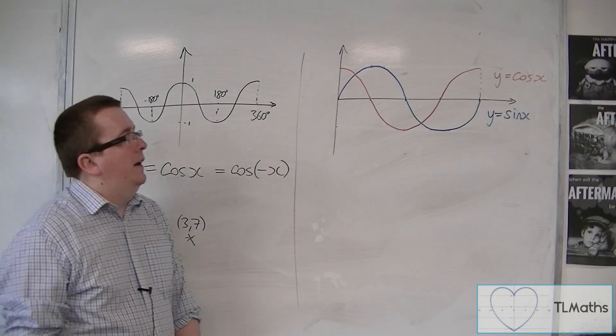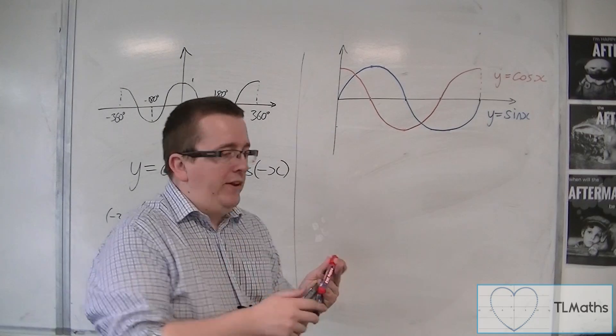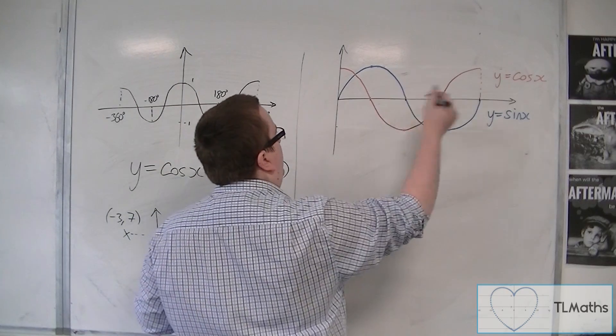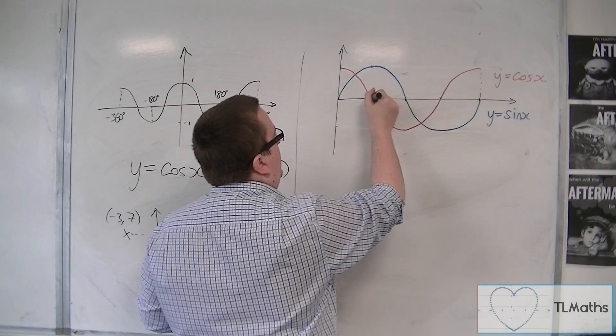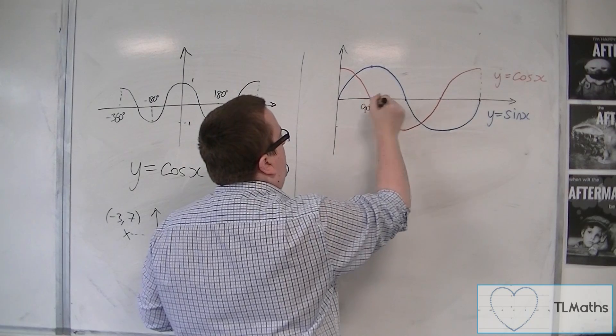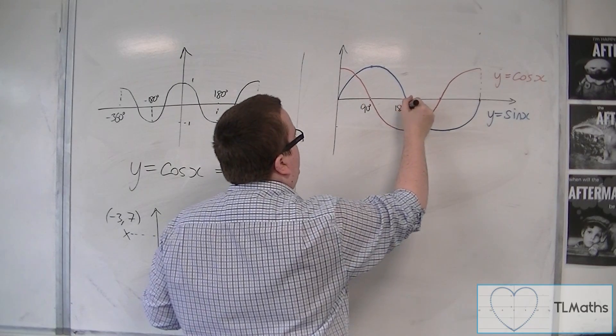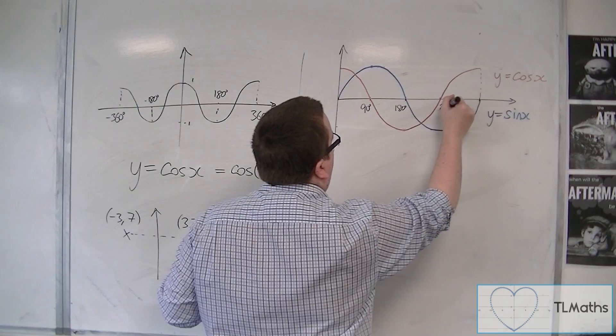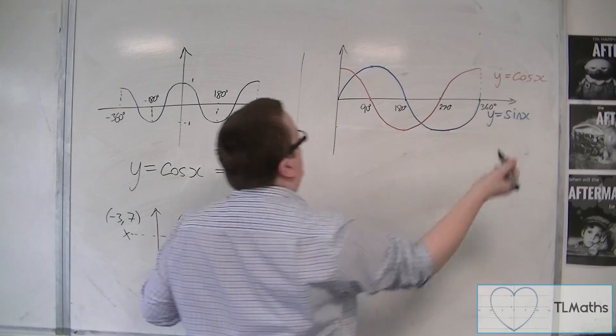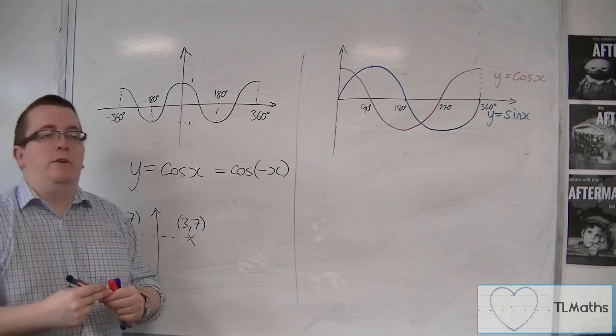So, there is a fairly adequate sketch of y equals sine x and y equals cosine of x. This is 90 degrees. That's 180 degrees. That's 270 degrees. And that's 360. Or you could put them into radians if you like.